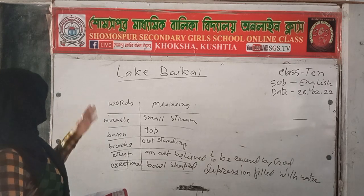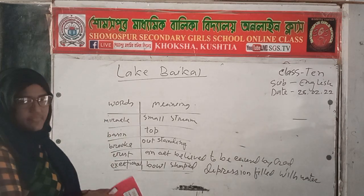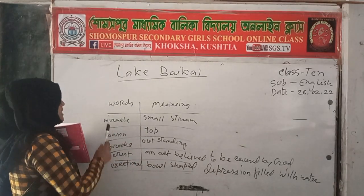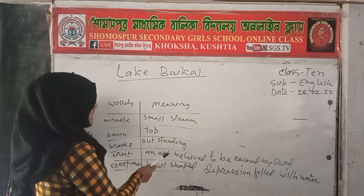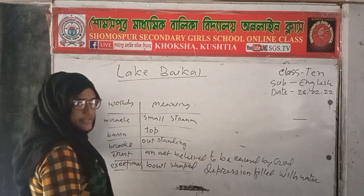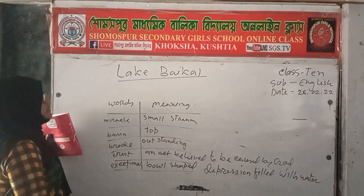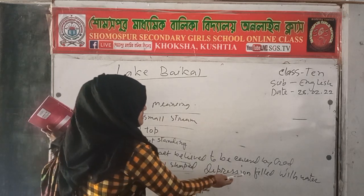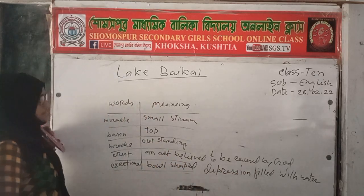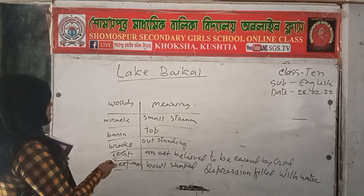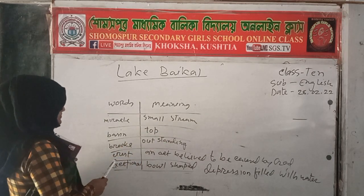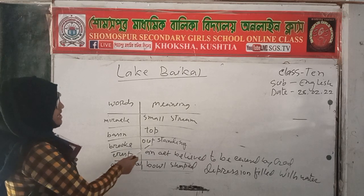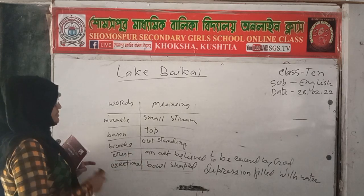Now the meaning of the words. Here we have five meanings for five words. Miracle means an act believed to be caused by God. Basin means a ball-shaped depression filled with water. Brook means a small stream. Crest means top. And exceptional means outstanding.